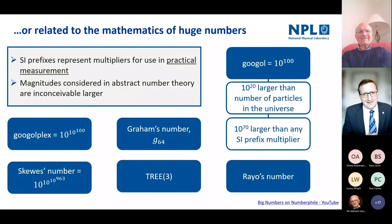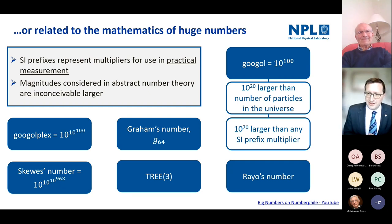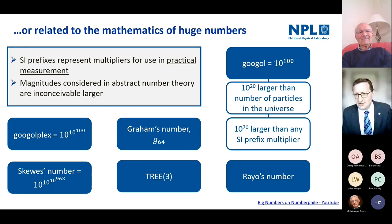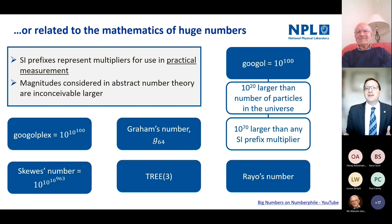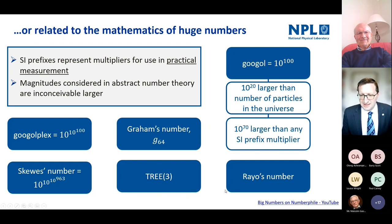SI prefixes are also not related to the mathematics of really huge numbers. SI prefixes represent multipliers used in practical measurement — numbers up to about 10 to the 30. A googol, for instance, is 10 to the power 100, which is 10 to the power 70 larger than any prefix multiplier we'll consider, and also 10 to the power 20 larger than the number of particles in the universe. So SI prefixes are not related to the huge numbers found in abstract number theory.